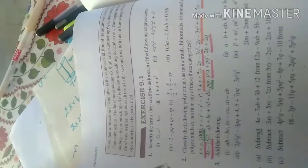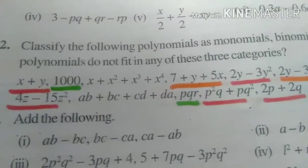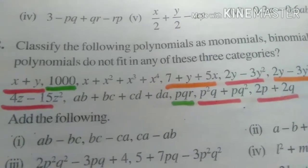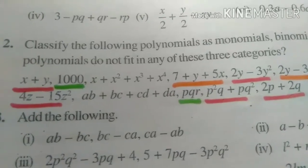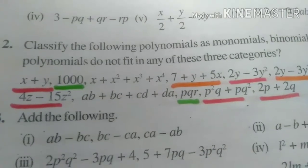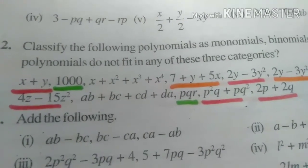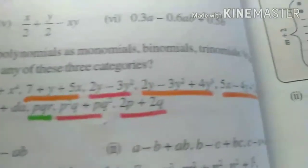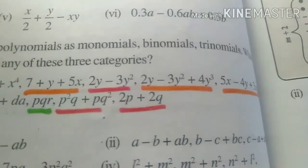And then you have to just identify which of these are not in these three categories. So clearly you can see that the terms which are marked by the green color as 1000 and PQR, they are the monomials. The terms which are marked by the red color, that is X plus Y,